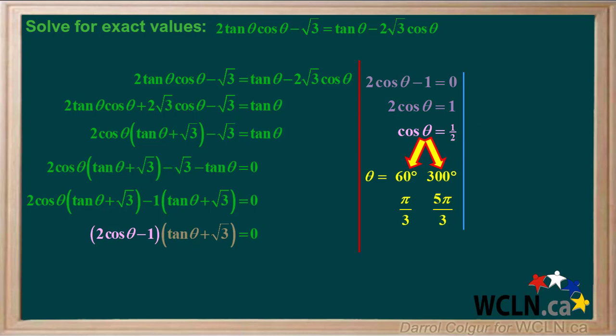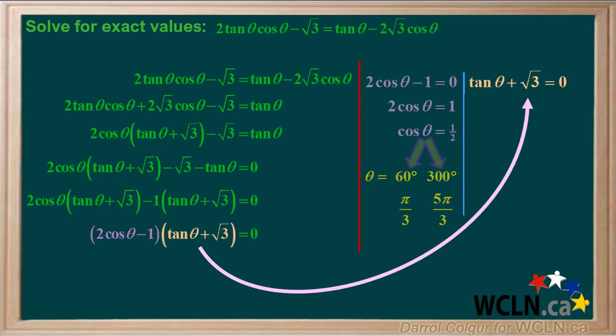Cos theta is positive 1 half for angles 60 degrees, which is pi over 3 radians, and 300 degrees, which is 5 pi over 3 radians.